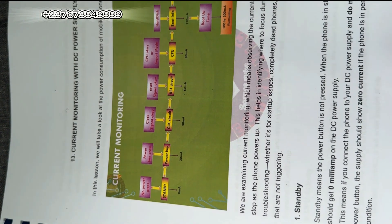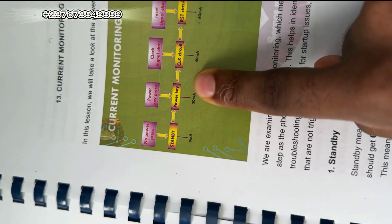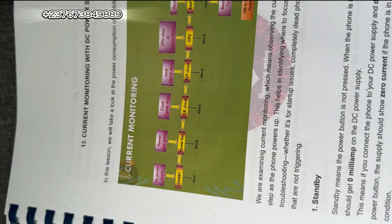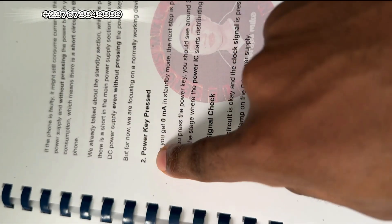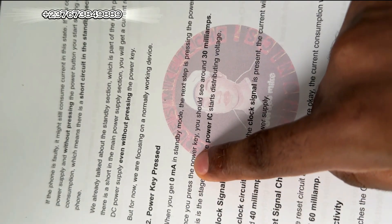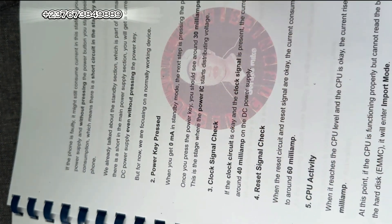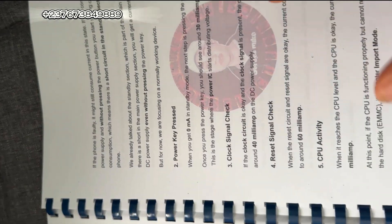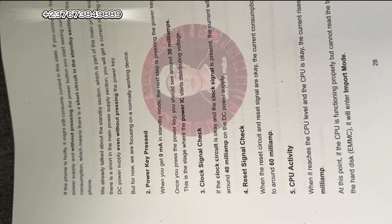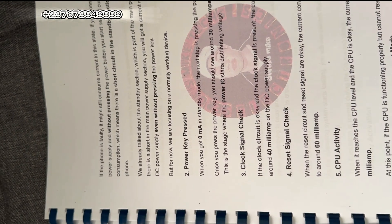On the phone we are working on, we are getting between 0 mA to 17 mA - not even up to 30 mA. Looking at the section that says 'power key press': when you get 0 mA in standby mode, the next step is to press the power key, and you should see around 30 mA. We are missing that - we are only getting 17 mA. This is the stage where the power IC starts distributing voltage, so the power IC is not fully triggering.